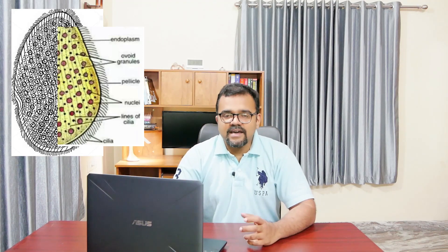The cilia are arranged in helical rows and beat in metachronal waves. The surface bears folds supported by microtubules, and in opalines there is no cytopharynx; nutrients are absorbed via pinocytosis over the entire body surface.